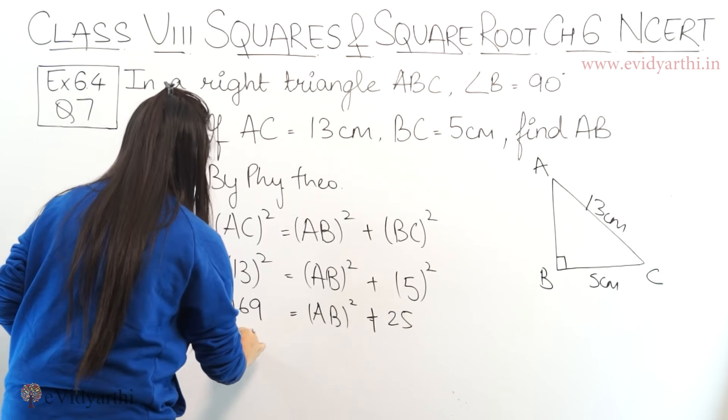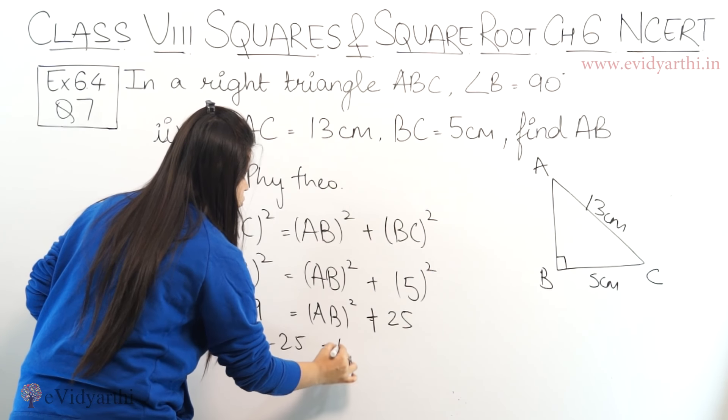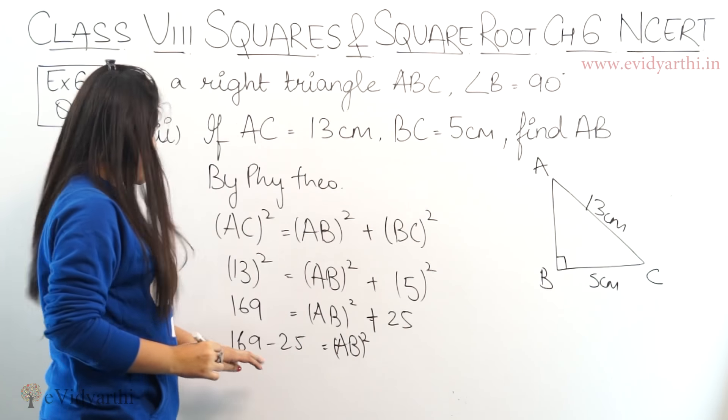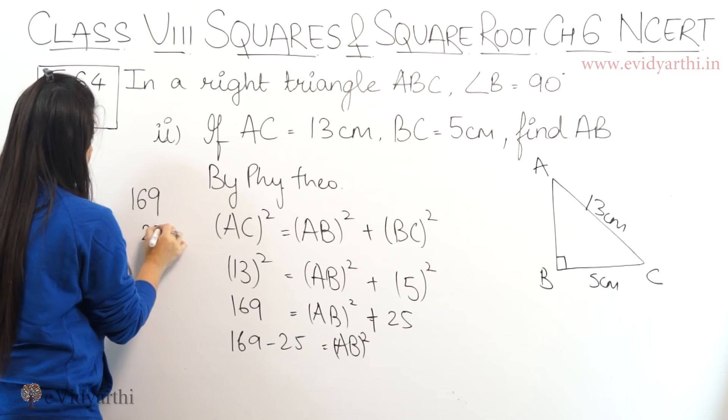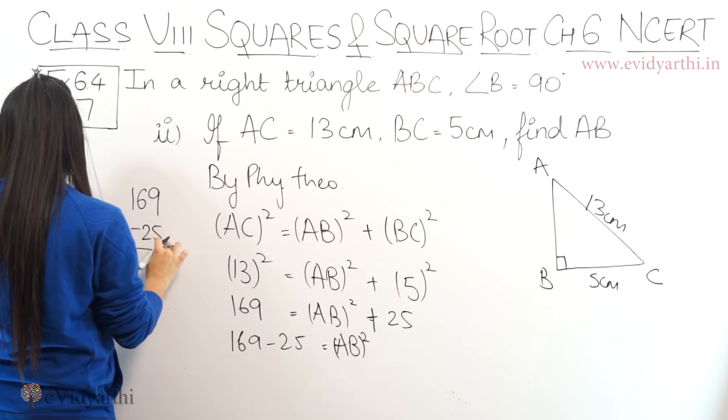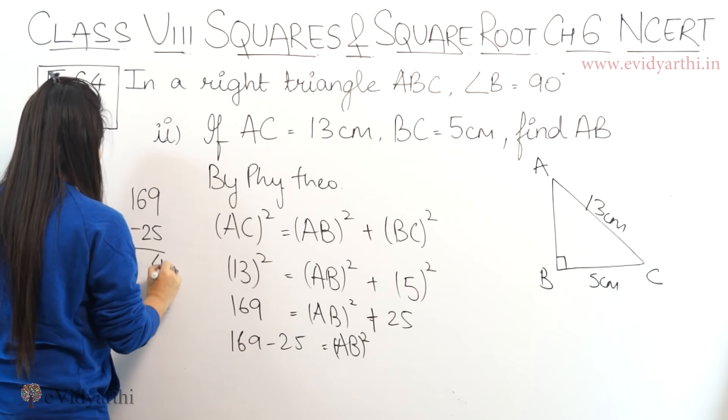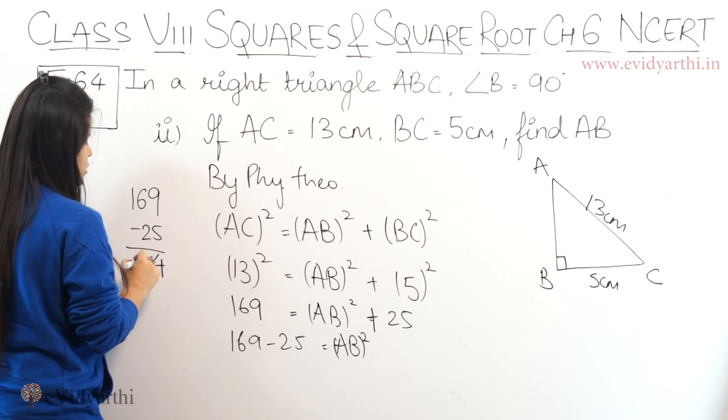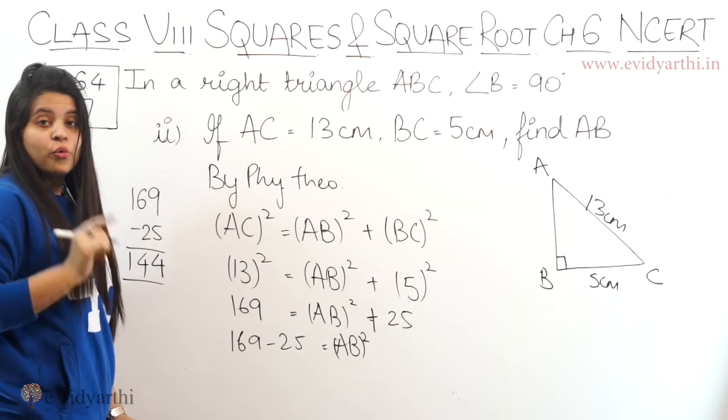Now to find AB squared, we move 25 to the other side. This will be 169 minus 25 equals to AB squared. So 169 minus 25: 9 minus 5 is 4, then 6 minus 2 is 4 again, and then 1. So we have 144.